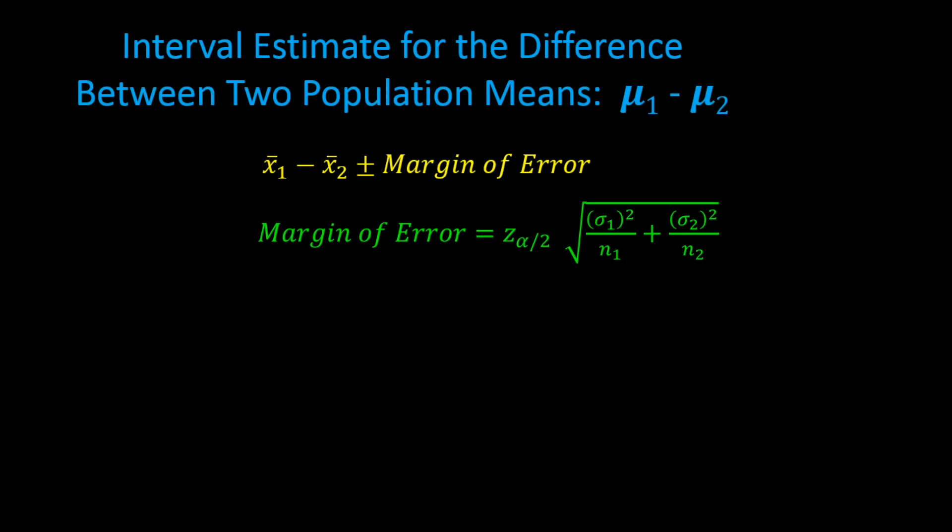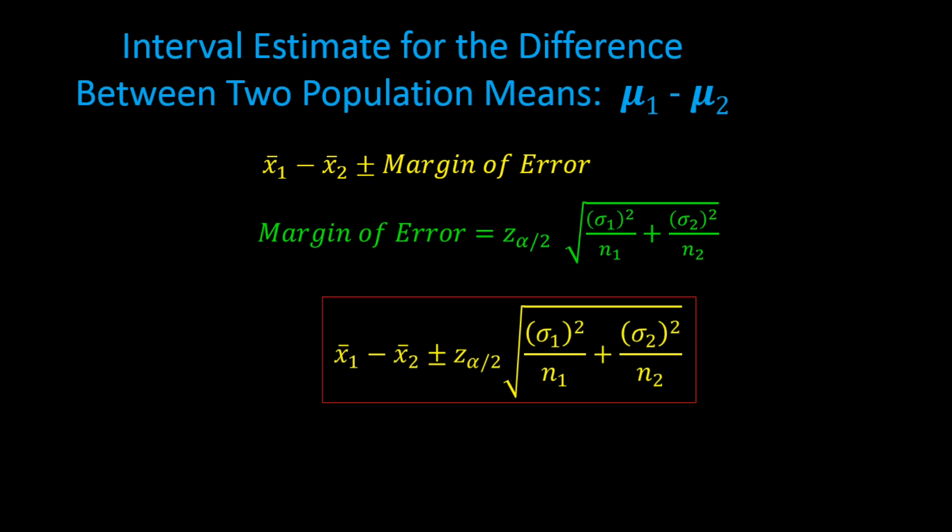To get a confidence interval estimate for the difference between two population means, we take x bar 1 minus x bar 2 plus and minus a margin of error. The margin of error is z alpha divided in half times the square root of sigma 1 squared over n1 plus sigma 2 squared over n2. Alpha is split in half because confidence intervals have both an upper tail and a lower tail.